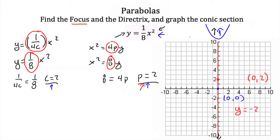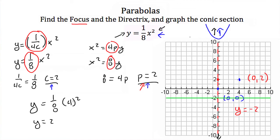Now that I've found the focus and the directrix, all I have left to do is sketch this conic. We need a couple of points. If I plug in positive 4 for x, I'll have y is equal to 1/8 times 4 squared. 4 squared is 16, and multiplying by 1/8 gives y is equal to 2. So we have the point (4, 2). And by symmetry across our axis of symmetry, we also have the point (−4, 2). Connecting these three points with a smooth curve gives us our parabola. So now that we know how to find our focus and our directrix, we've completed the tutorial on parabolas as conic sections.